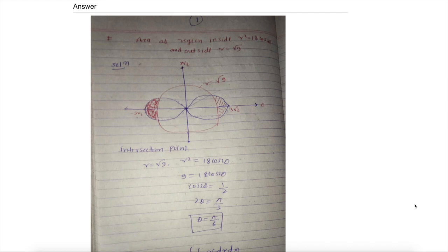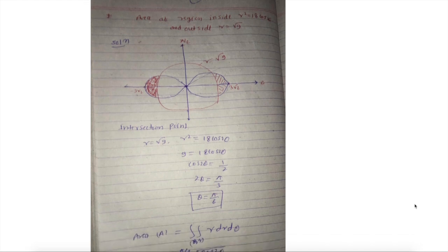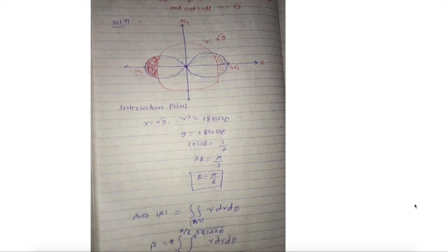Define the intersecting points. Theta is equal to pi over 6.